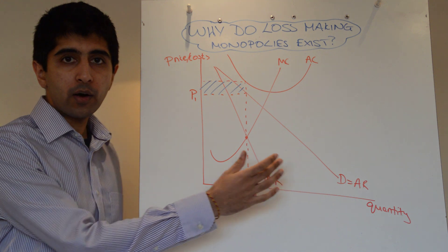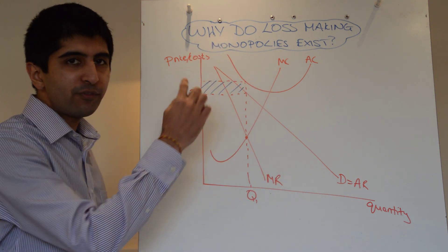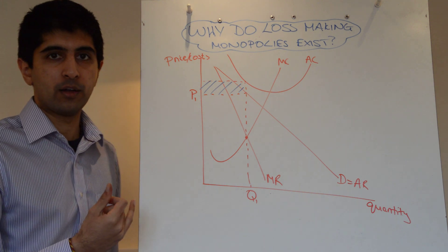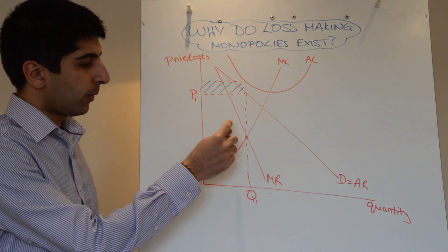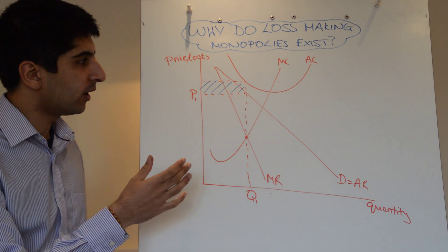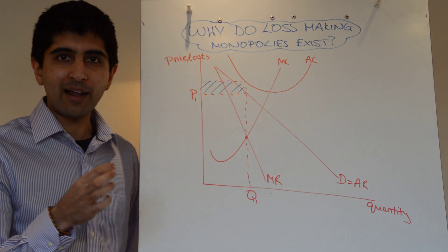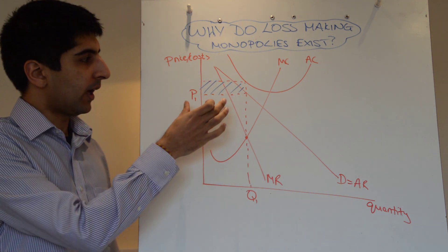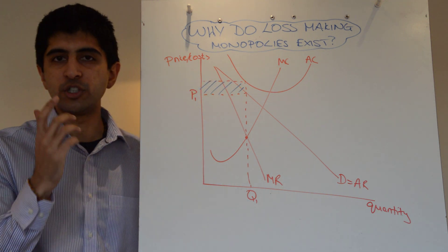You draw your AR and MR curves as normal, but then you draw your average cost curve to be above the average revenue curve. This means that at profit-maximising levels, where we see Q1 quantity and P1 price being charged, the average cost is actually greater than the average revenue, which means that there is a loss made equal to this blue shaded area.